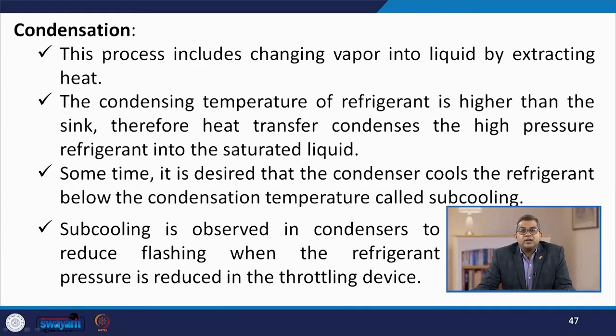The condensation process involves changing vapor into liquid by extracting heat. Whatever heat was absorbed, plus the work carried out through the compressor, must be extracted. The condensing temperature of the refrigerant is higher than the sink; therefore, heat transfer condenses the high pressure refrigerant into saturated liquid. Sometimes it is desired that the condenser cool the refrigerant below the condensation temperature — called subcooling. Subcooling in the condenser reduces flashing when the refrigerant pressure is reduced in the throttling device.